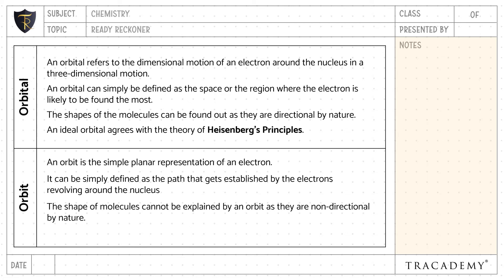An ideal orbital agrees with the theory of Heisenberg principle, whereas an orbit that is well defined goes against the Heisenberg principle.